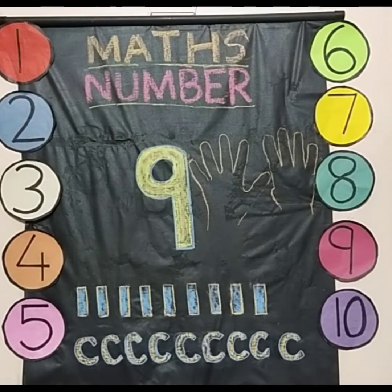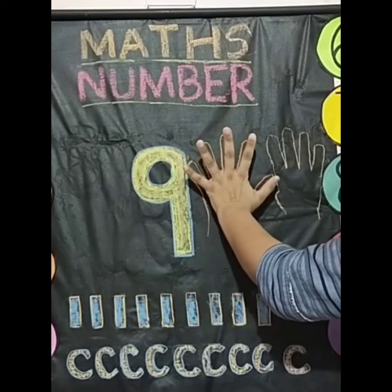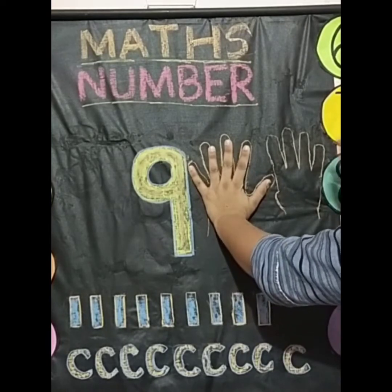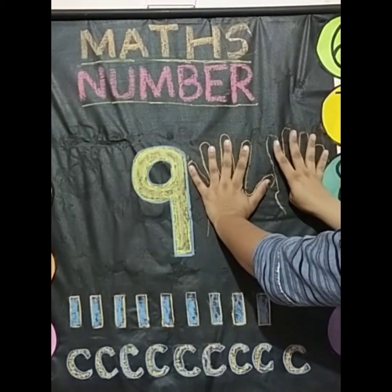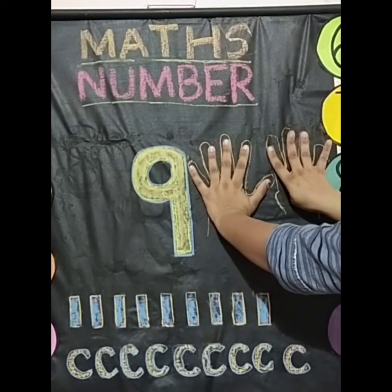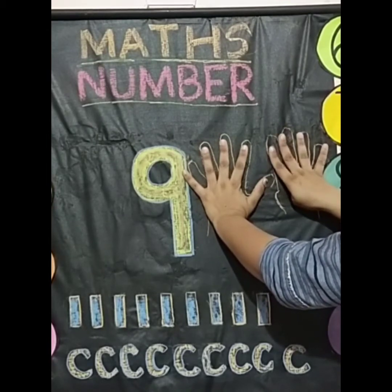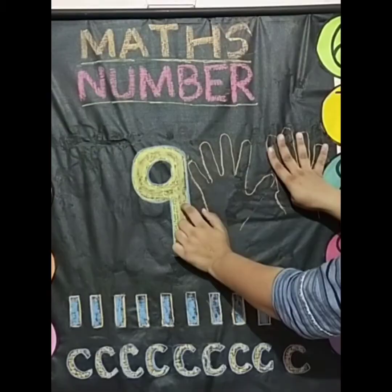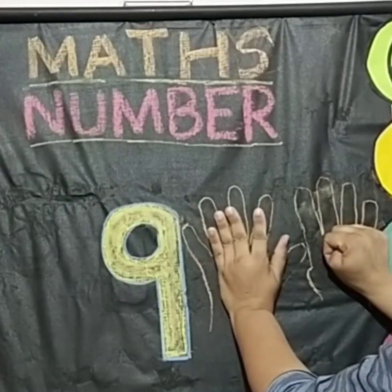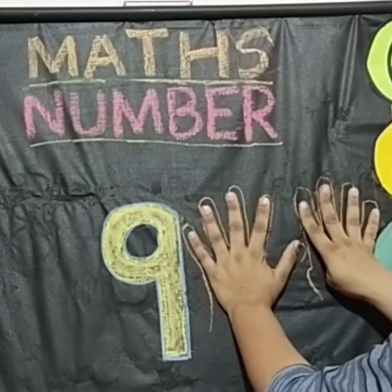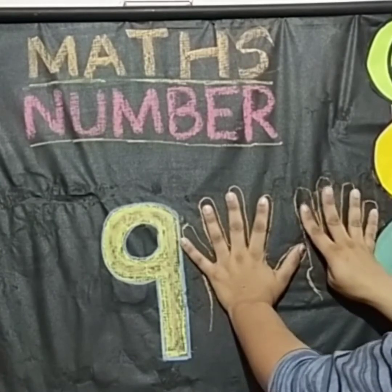Now start counting the fingers drawn on the board by keeping your own palm on that. I kept my first palm on it: 1, 2, 3, 4, 5 — 5 fingers. And here there is no thumb, so I will keep it aside: 1, 2, 3, 4 — 4 fingers. So 5 fingers and 4 fingers makes 9. 1, 2, 3, 4, 5, 6, 7, 8 and 9. 5 and 4 makes 9.